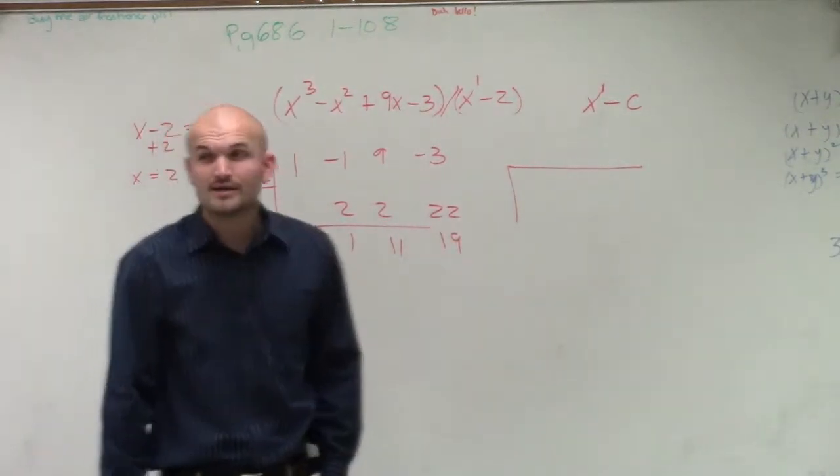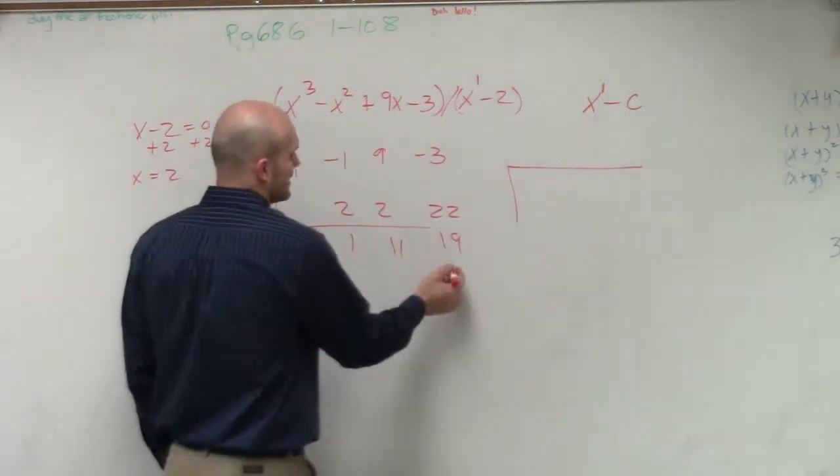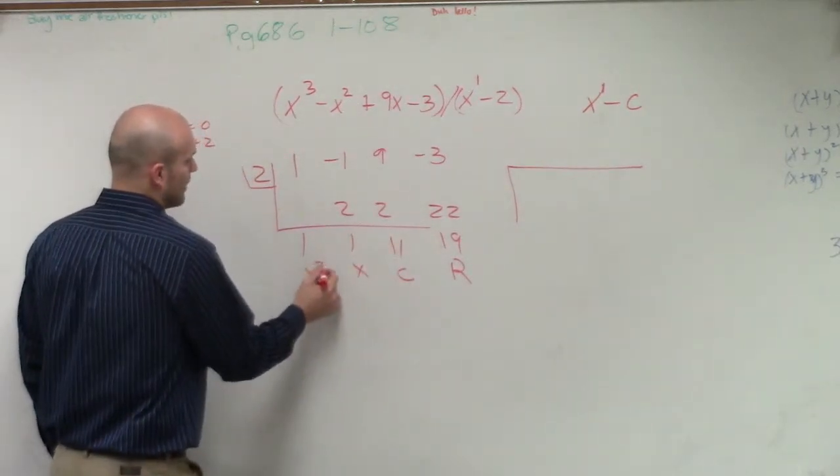So for this one, now we have a remainder. So we know that it does not divide evenly, and that's fine. So we can say that here's your remainder, constant, linear, and quadratic.